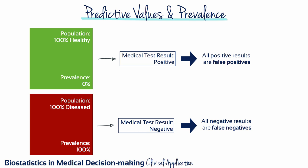Imagine a population in which no one has the disease. In such a group, all positive test results, even for a very specific test, will be false positives. Therefore, as the prevalence of a disease approaches zero, the positive predictive value of a test also approaches zero.